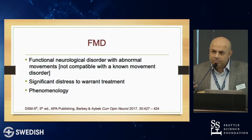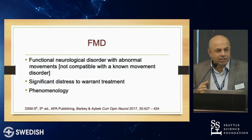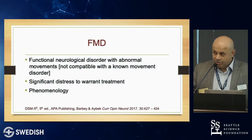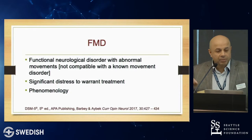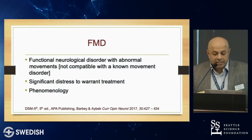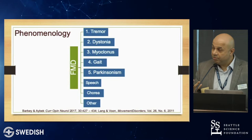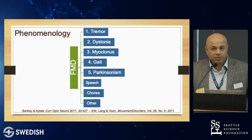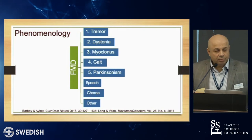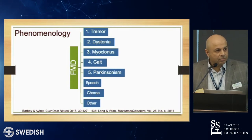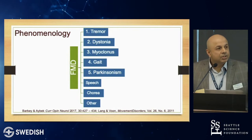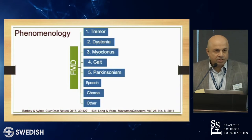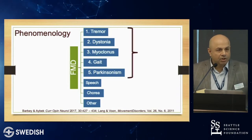FMD is a functional neurological disorder with abnormal movements causing significant distress, and the diagnosis is really dependent upon phenomenology — the kind of movements someone is having. Functional movement disorders can mimic tremors, functional Parkinsonism, functional dystonia, functional gait problems, speech problems, chorea, and more. For the sake of this talk, I'll be focusing on the first five.